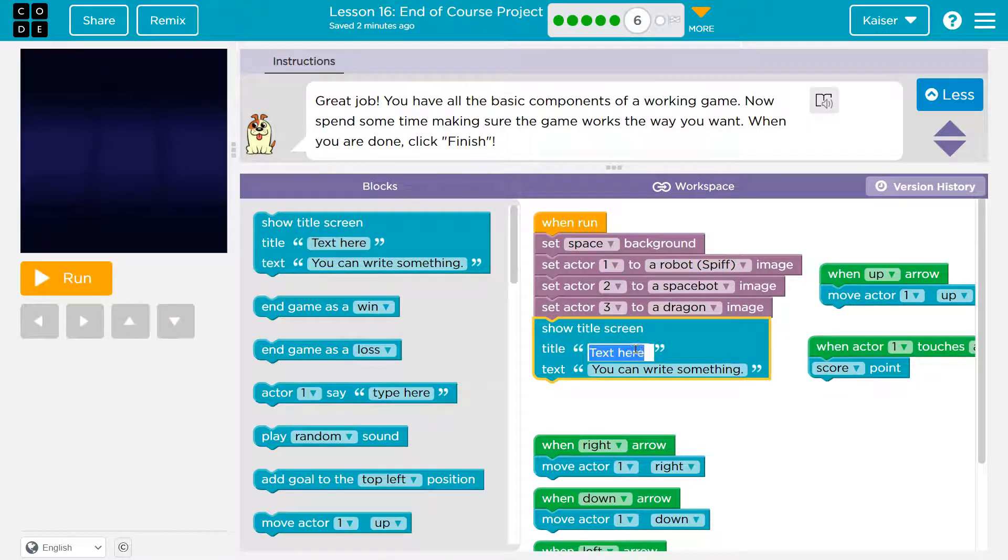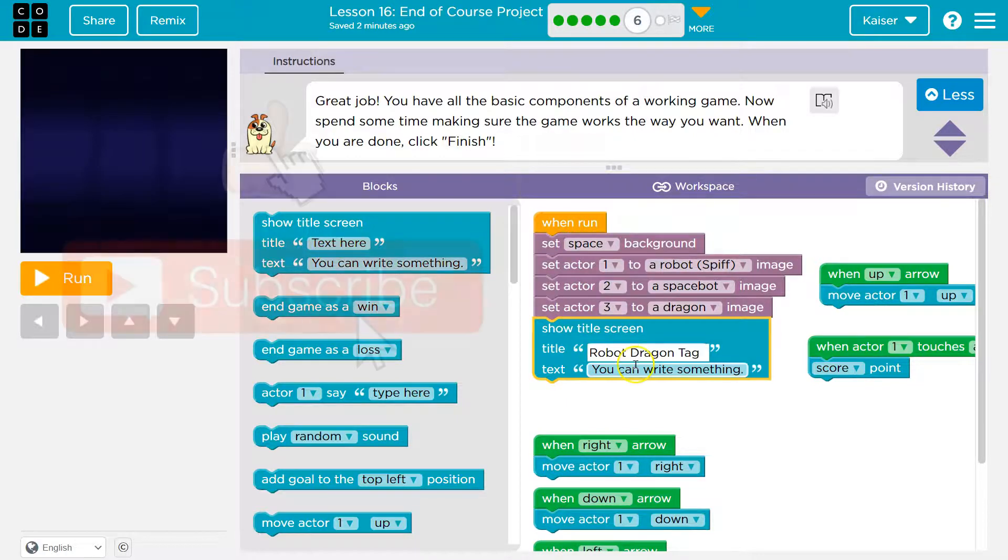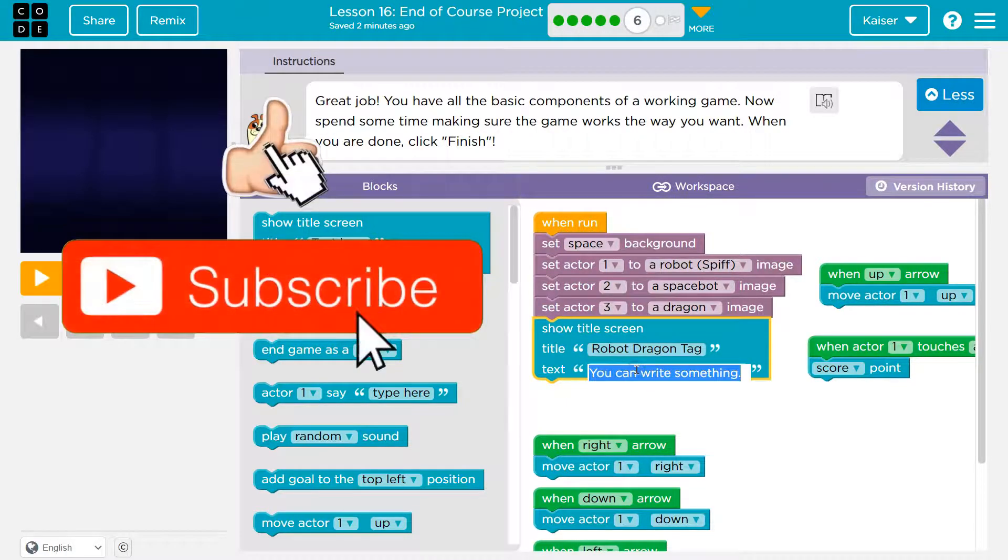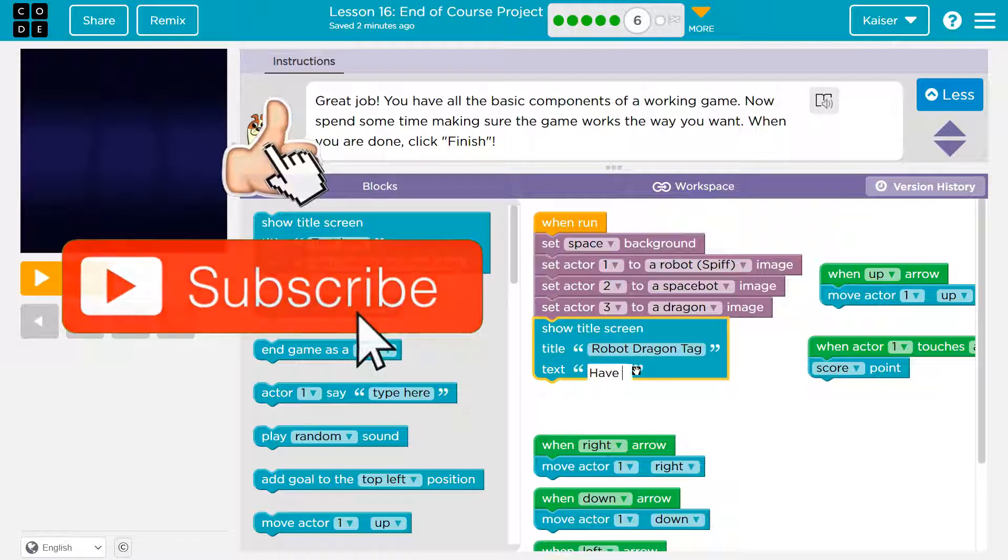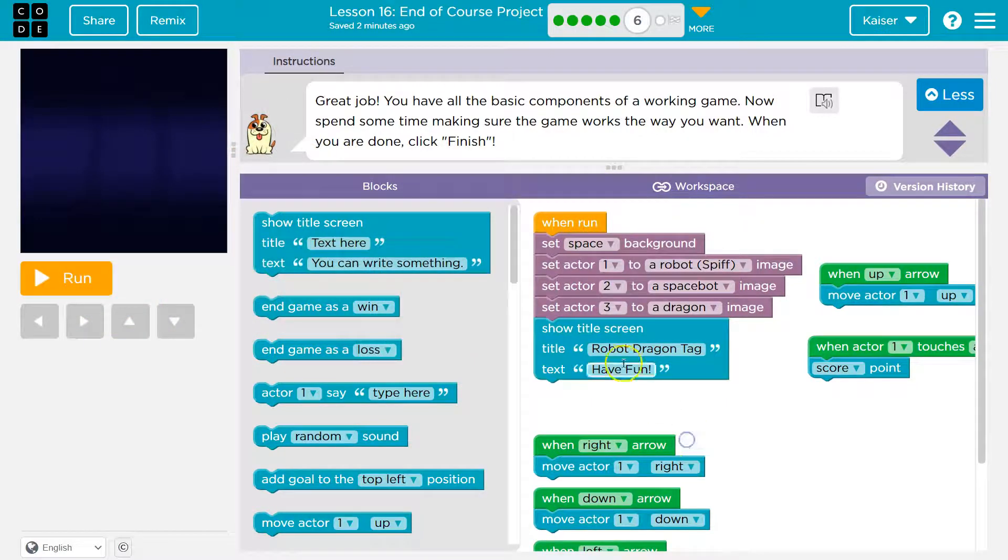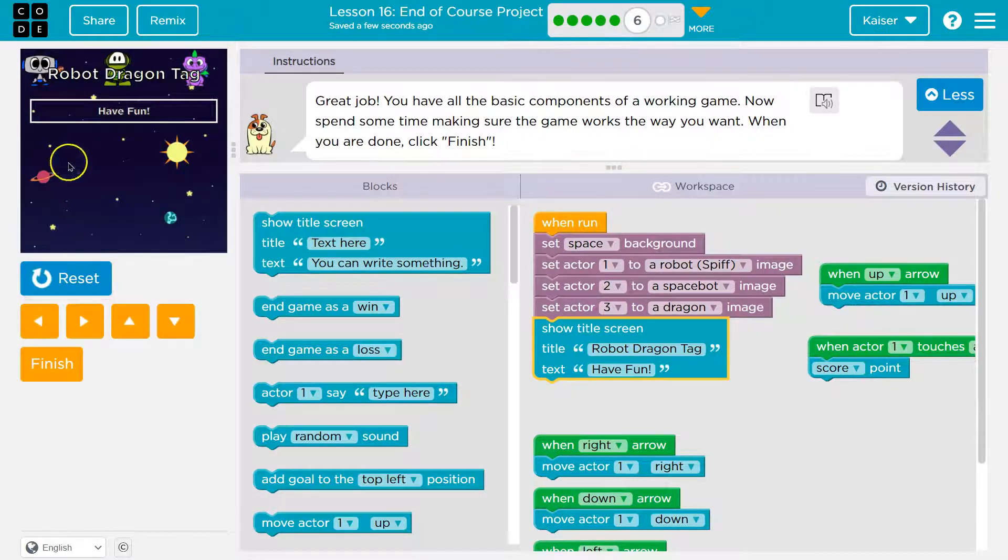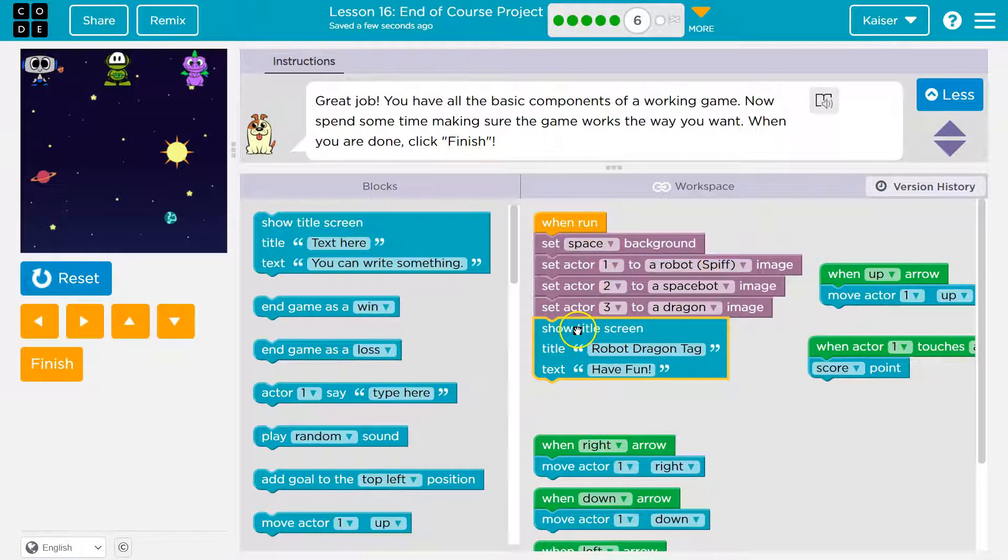Well, that's kind of cheating. Anyways, so title, I'm going to say alien. No, no, mine's a robot, though. Robot. Dragon. Tag. Sure. Text. Have fun. Cool. And this title screen is going to appear. Let's hit run. Boom. Robot title. Have fun. Right there. Pretty neat. Okay.